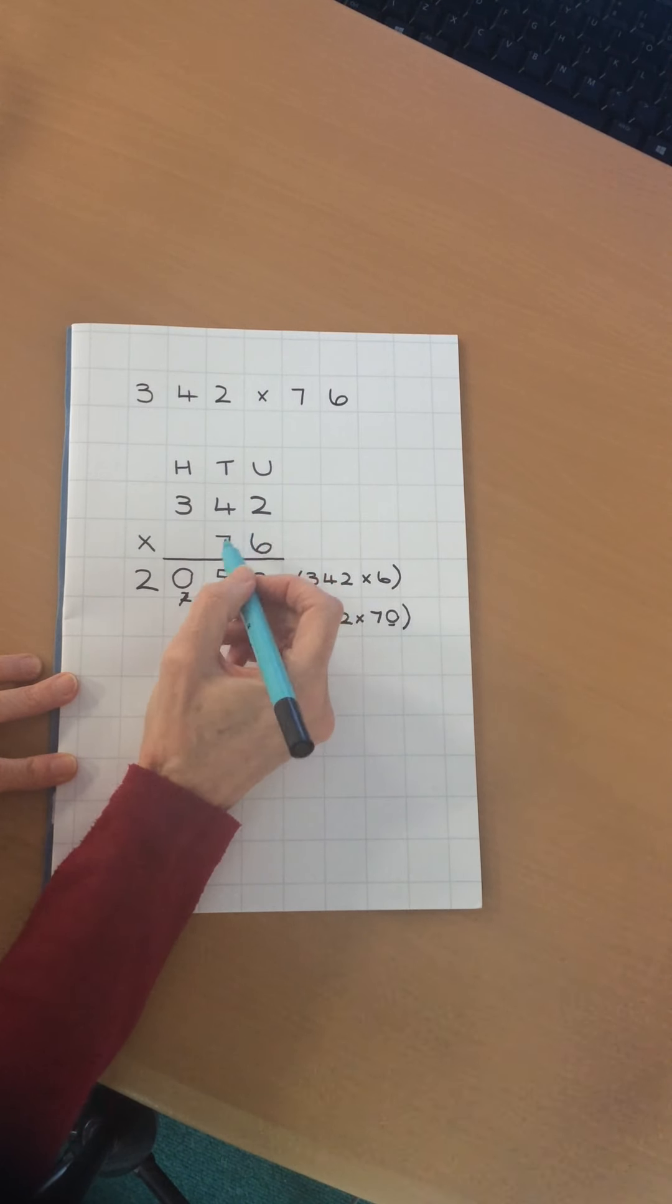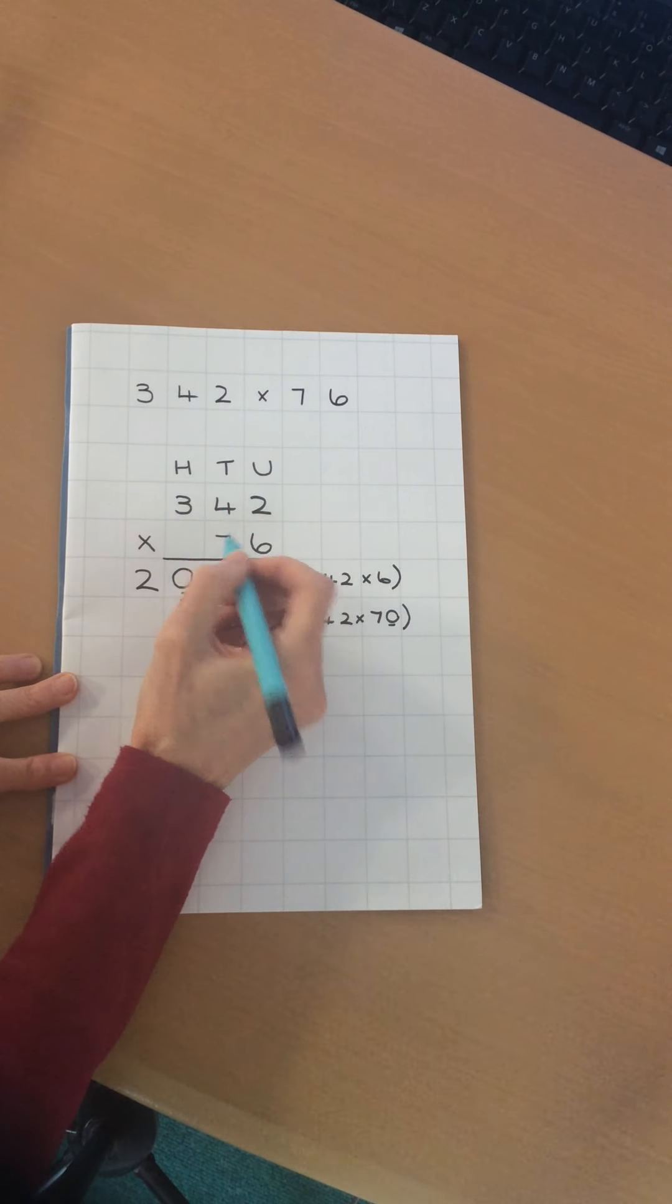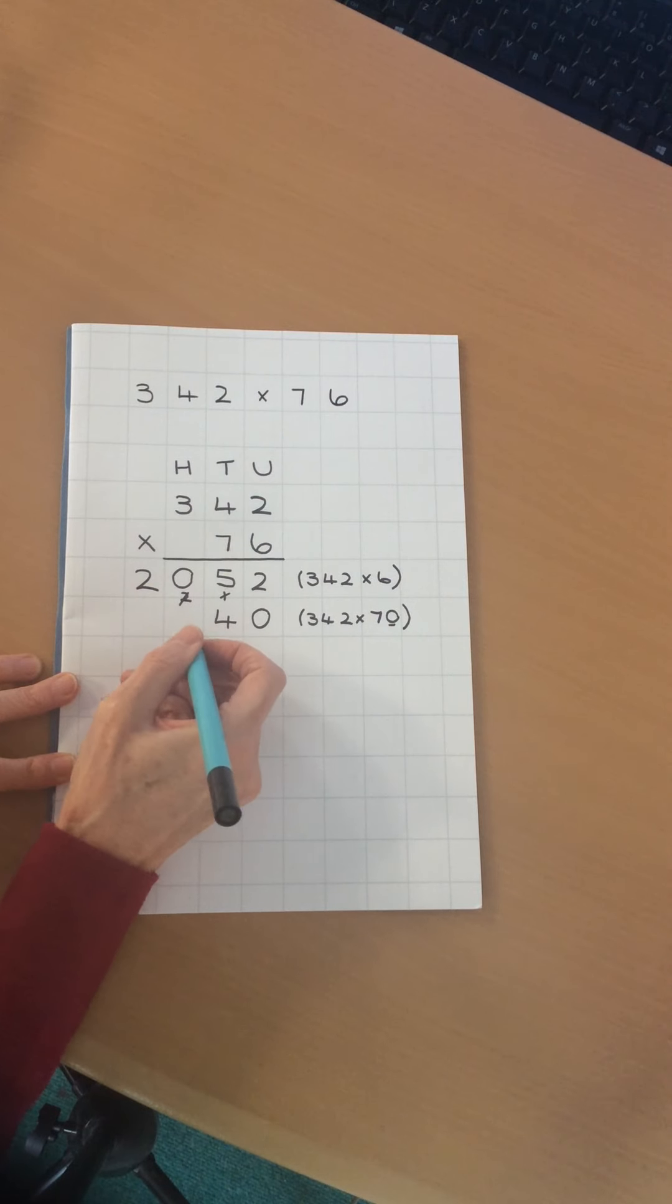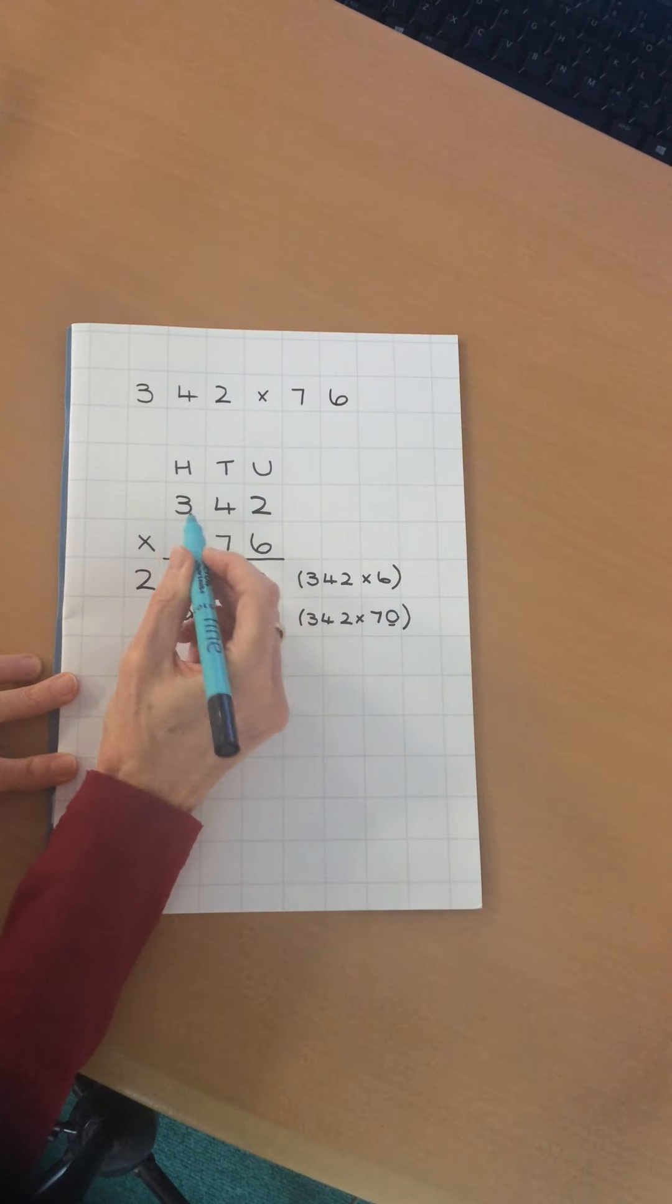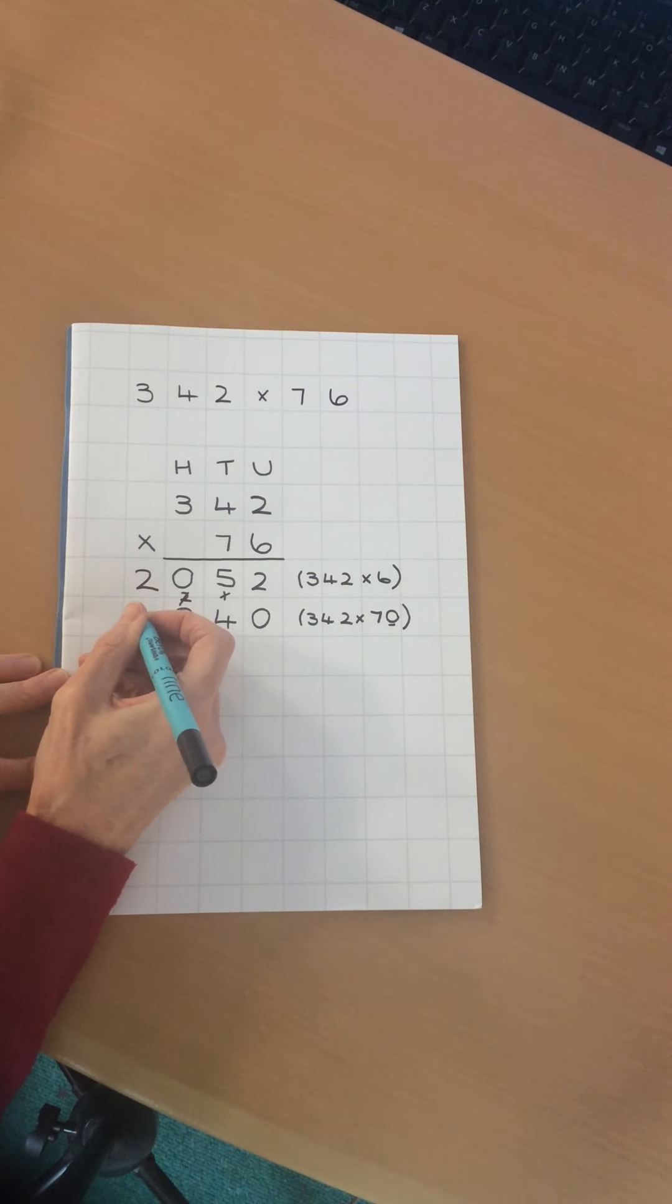So I'm going to do my 2 multiplied by 7, 14, carry the 1. 4 multiplied by 7, which is 28, and then one more, which is 29. Carry my 2. And then 3 multiplied by 7, which is 21, add on the 2, which gives me 23.